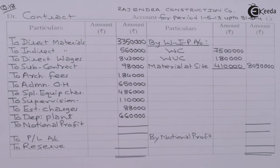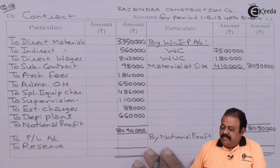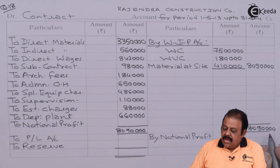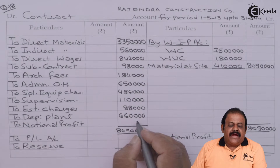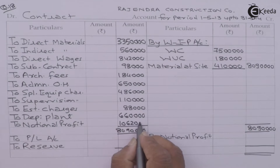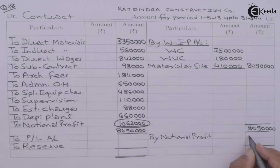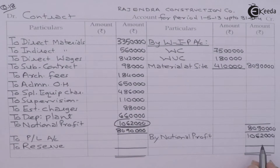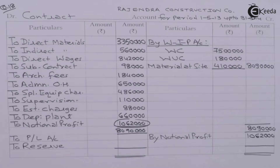Now we can find out the notional profit or loss for the first period of 11 months. The credit side totals 80,90,000. After deducting all expenses, we get a notional profit of 10,62,000. This 10,62,000 is carried down. We are required to split this amount between the profit and loss account and reserves. Usually we consider the percentage of work certified to contract price, but here we are required to prepare estimated contract accounts to divide this figure of 10,62,000.